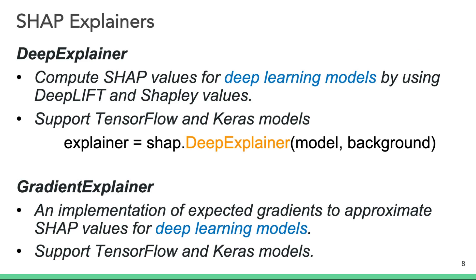This slide shows a couple of SHAP variants specifically designed to support deep learning models: Deep Explainer and Gradient Explainer. They do have variations in how they're implemented underneath, but they both serve the same purpose of creating SHAP explanations for deep learning models.